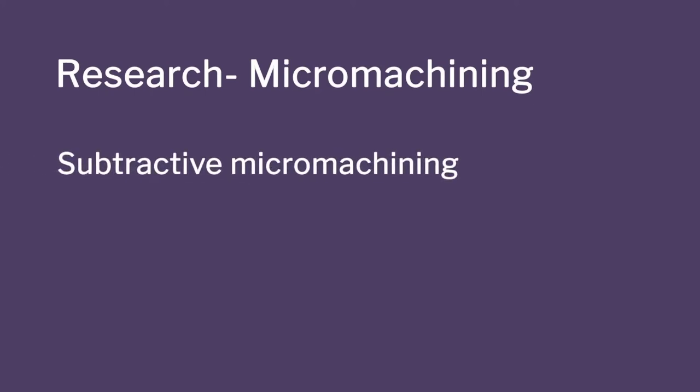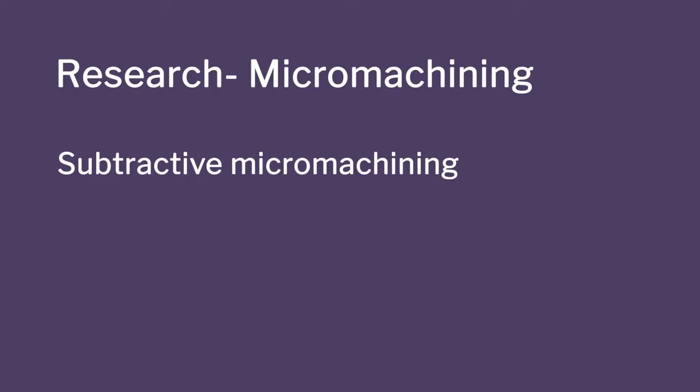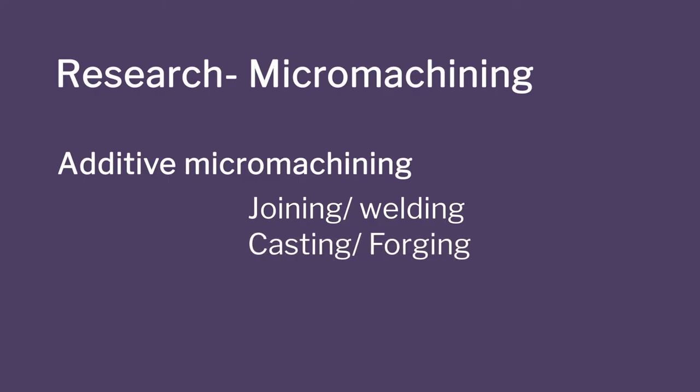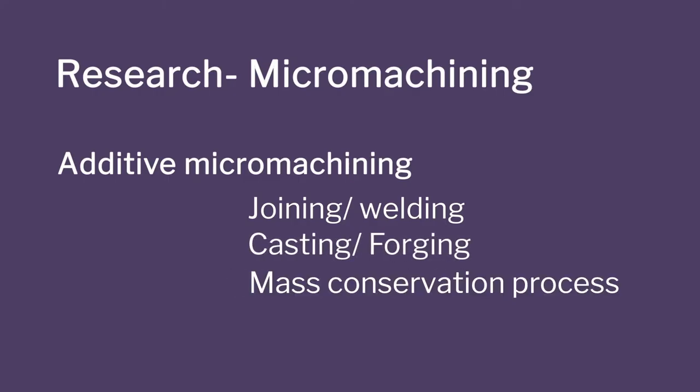The basic research areas in my lab: first is micro-machining. I can subtract material through machining — tool-based, electrochemical, or electrical discharge machining. Or I can add material, which we do in additive manufacturing, or do joining processes like welding, or mass-conservation processes like casting and forging. We don't just develop the process — we also develop the machines, because commercially available machines are very few and very expensive. So I actually go ahead and build those machines.